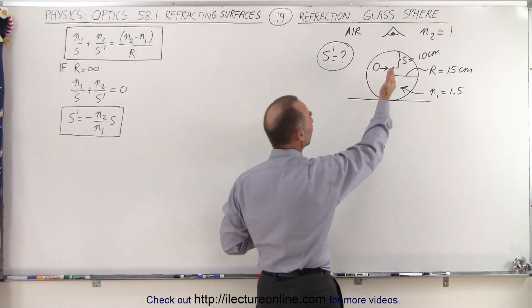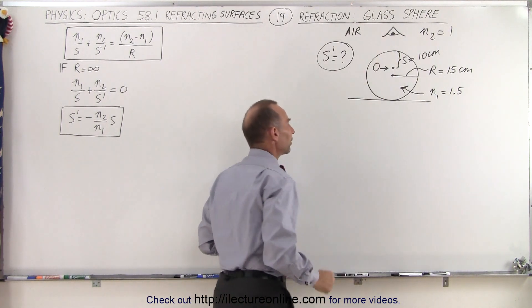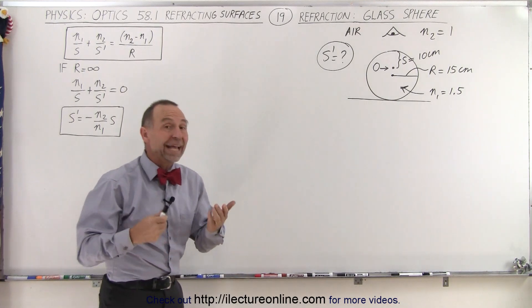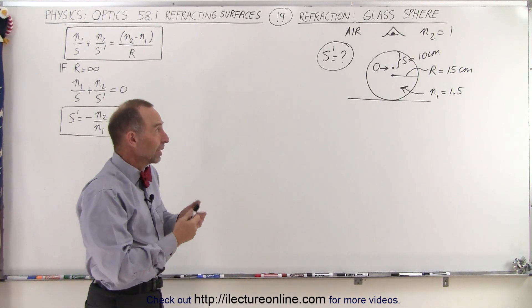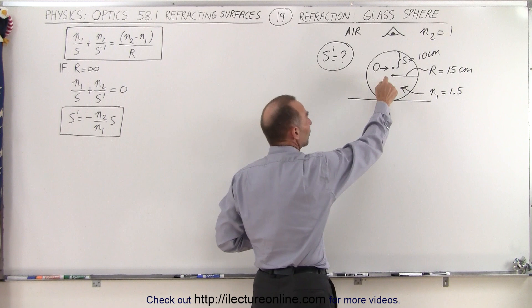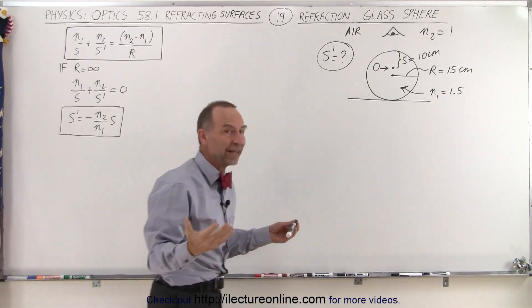The question is, where will the image appear when we're looking down into the sphere? We're looking for s prime, so either it's an image inside the sphere on the same side as the object or outside the sphere. How do we find out? We use this equation for refracting surfaces.